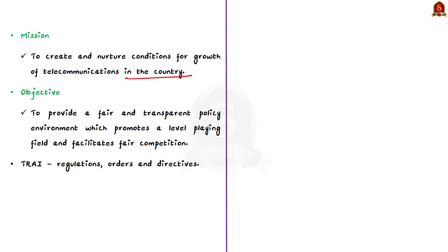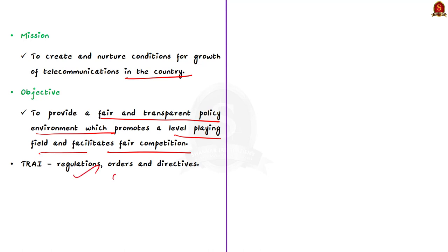TRAI consists of a chairperson, two whole-time members, and two part-time members, all appointed by the Government of India. TRAI's mission is to create and nurture conditions for growth of telecommunications in the country so that India can play a leading role in the emerging global information society. One of the main objectives is to provide a fair and transparent policy environment that promotes a level playing field and facilitates fair competition.